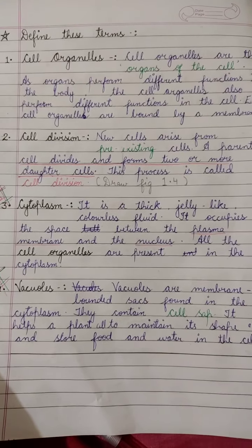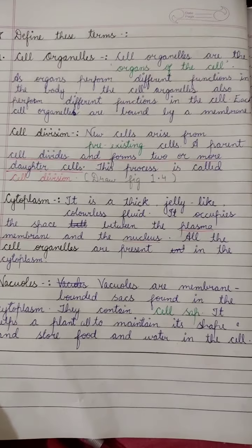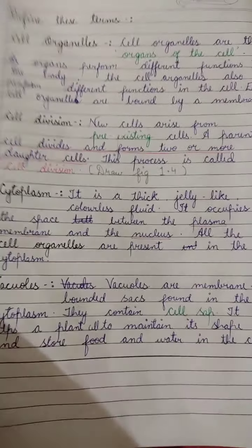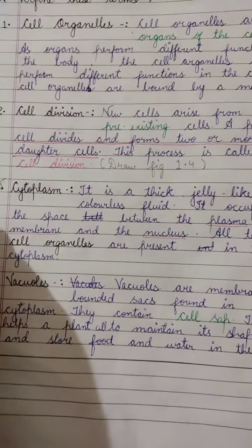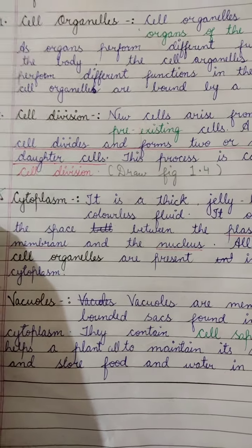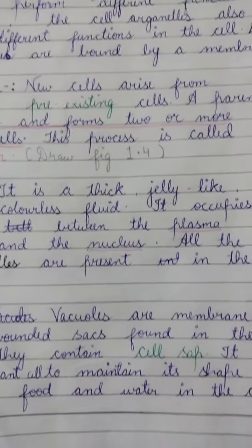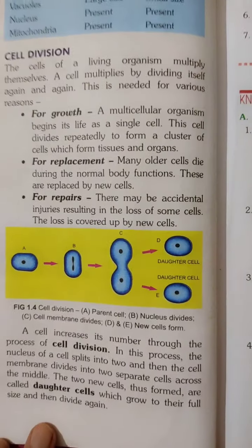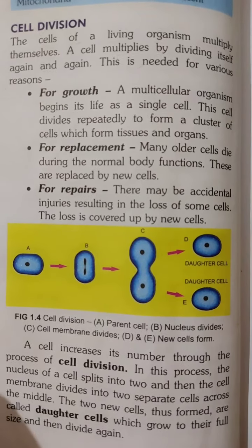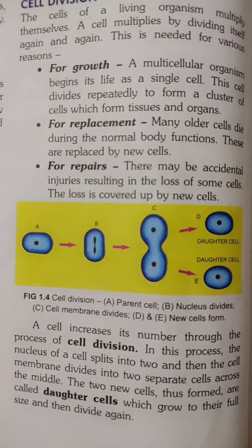After notes, define these terms. For diagrams, you will underline with black pen only. And in front of this topic, cell division, you will draw diagram 1.4. This is diagram 1.4 — you will draw this in front of the cell division topic on your blank sheet only.